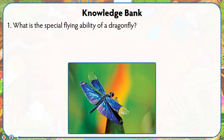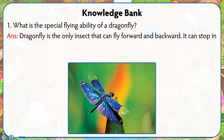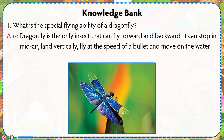Knowledge Bank: What is the special flying ability of a dragonfly? A dragonfly is the only insect that can fly forward and backward. It can stop in mid-air, land vertically, fly at the speed of a bullet and move on the water's surface like a hovercraft.